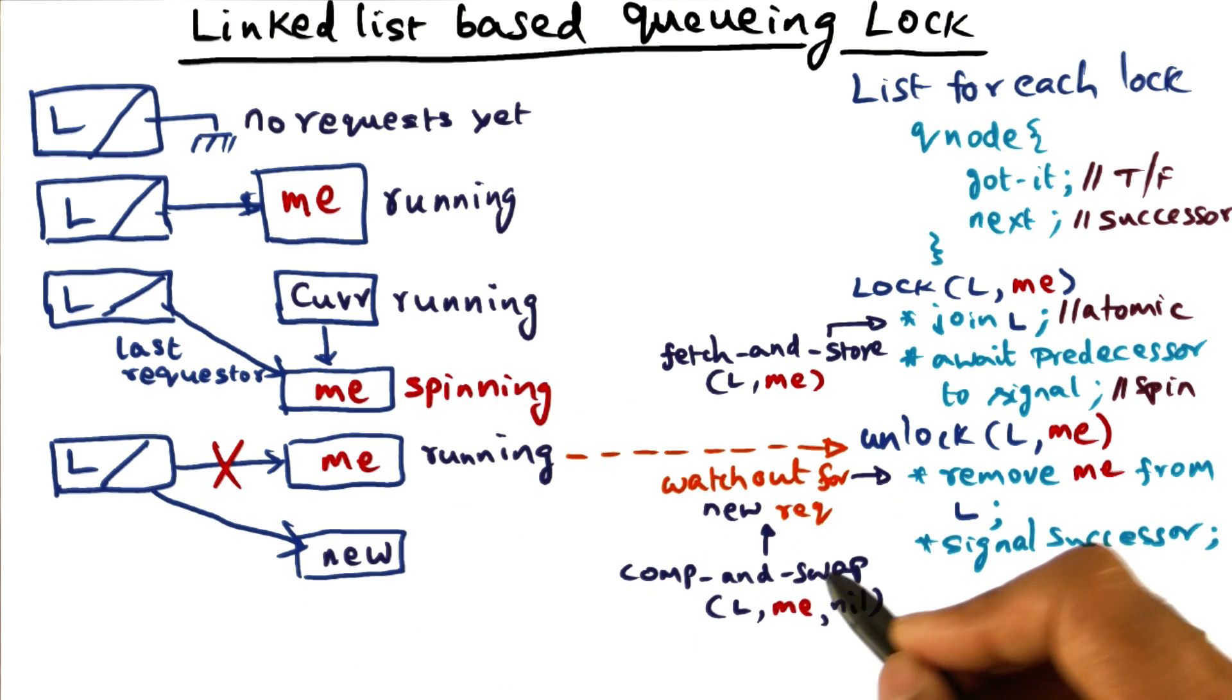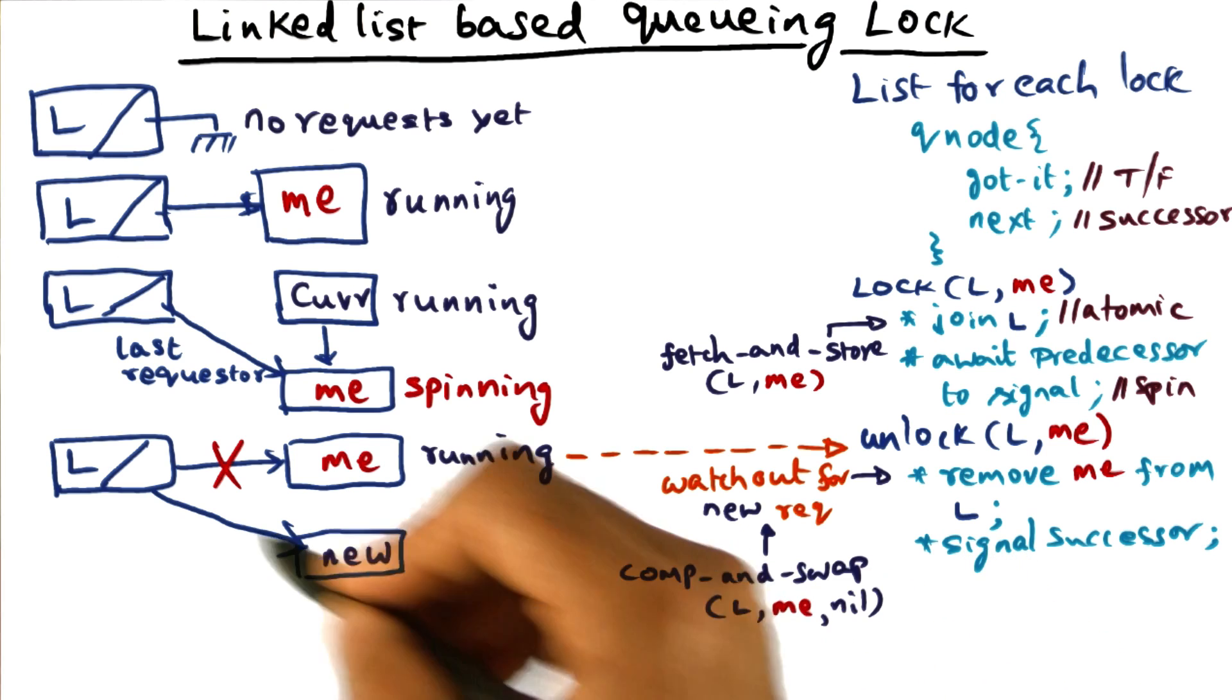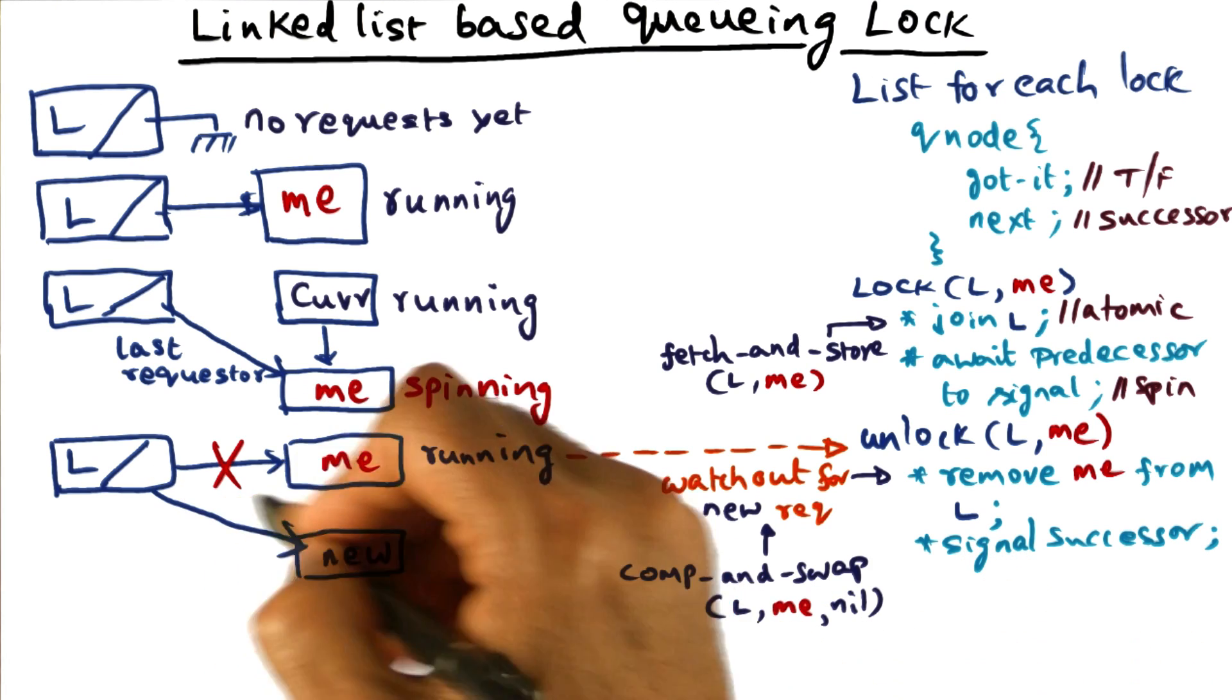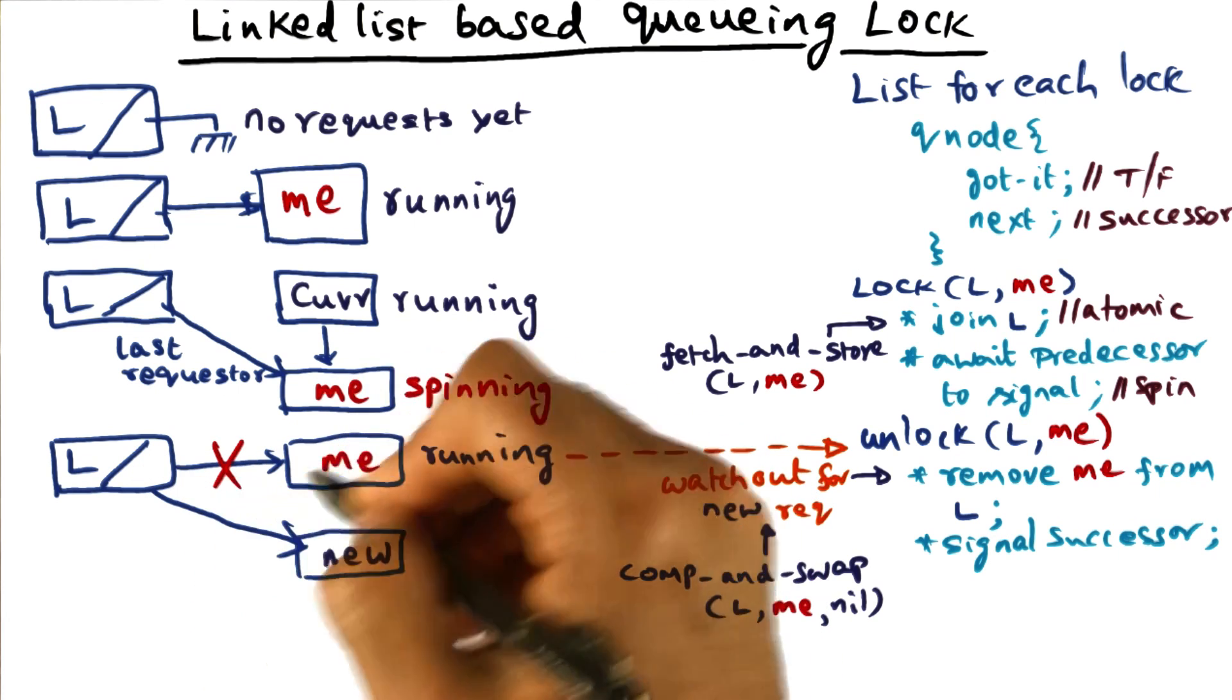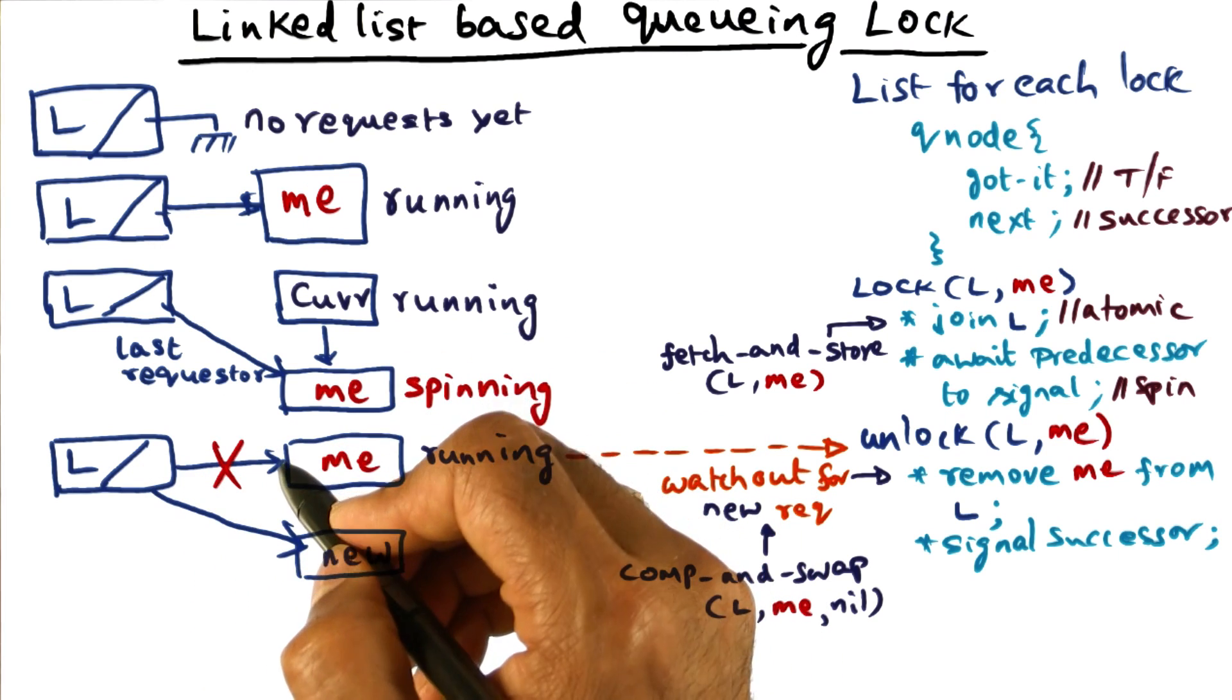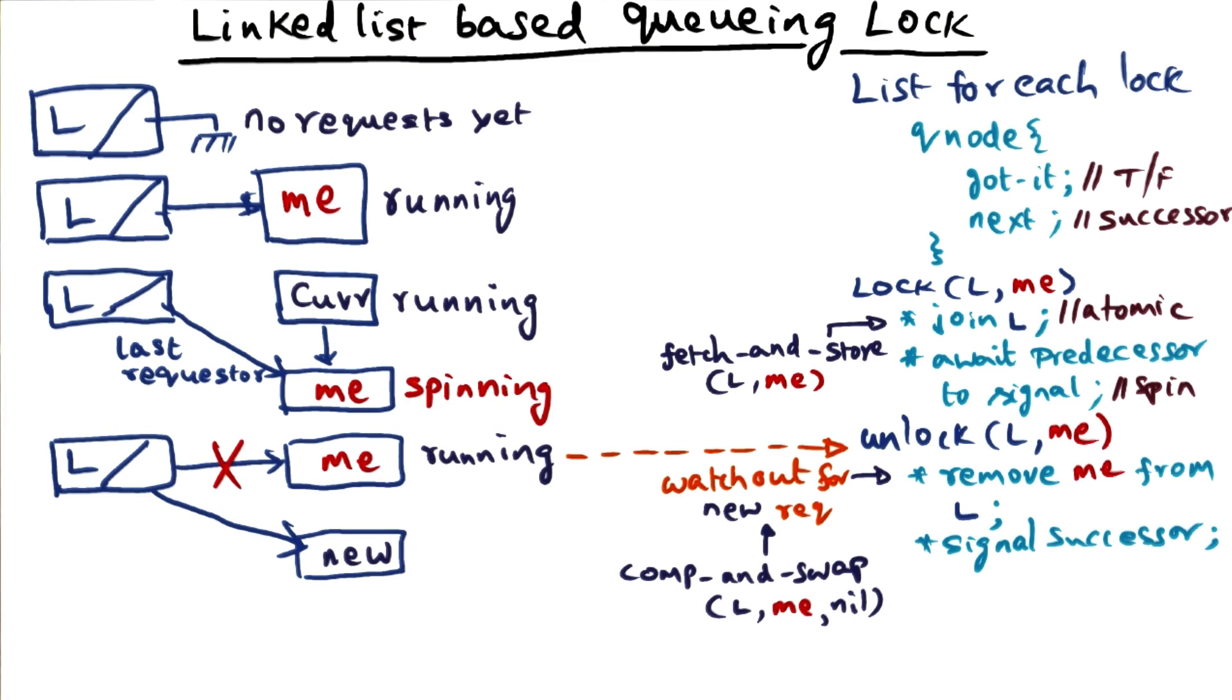So, essentially, when I execute the compare and swap operation on L, me, and nil, what I'm telling is to set this guy to nil if he's pointing to me. If he's not pointing to me, don't do that. So that's the idea behind compare and swap.